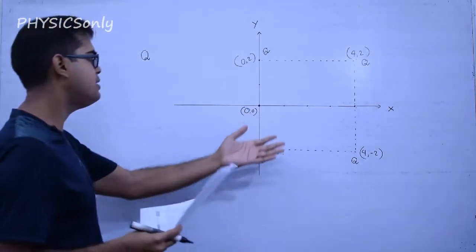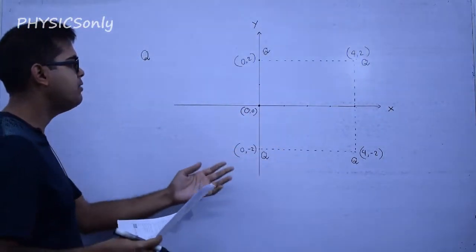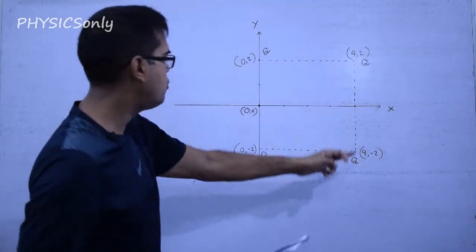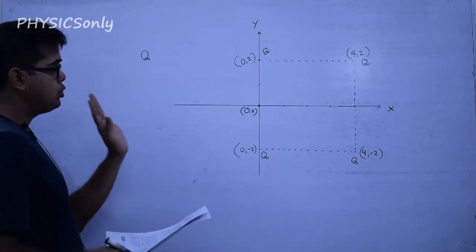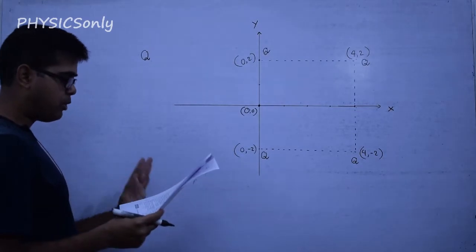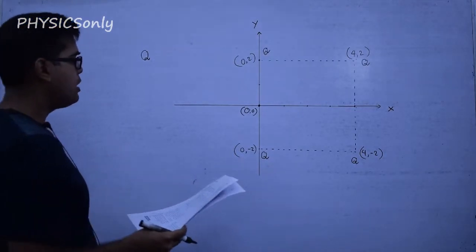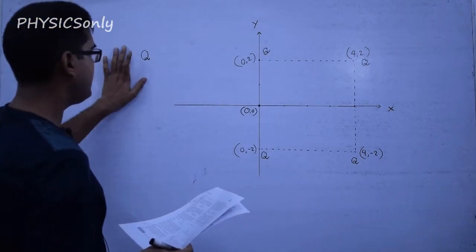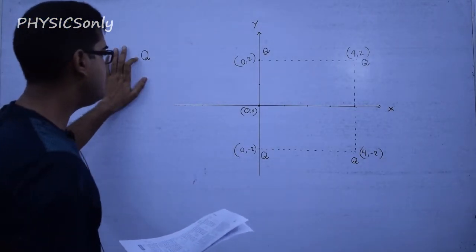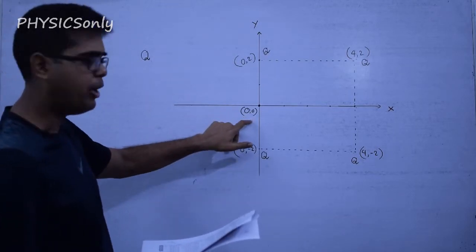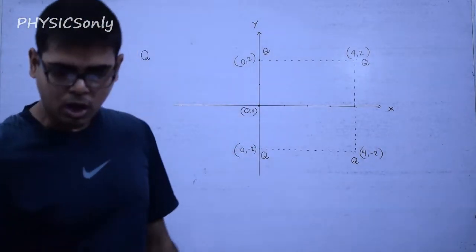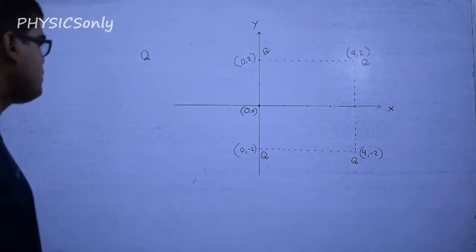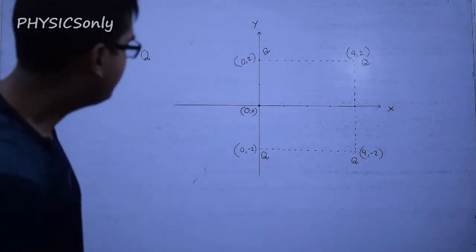So we have four charges given at these specific four coordinates in the x-y plane. What we have to calculate is the work done to bring another capital Q charge to the origin point (0,0). How will we approach this kind of problem?